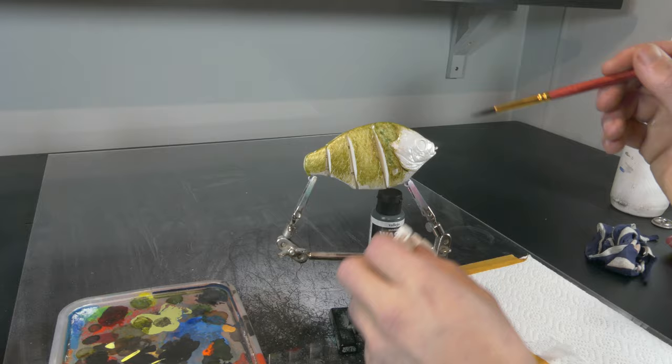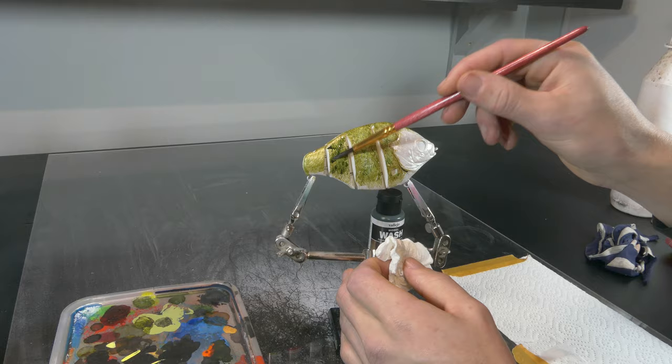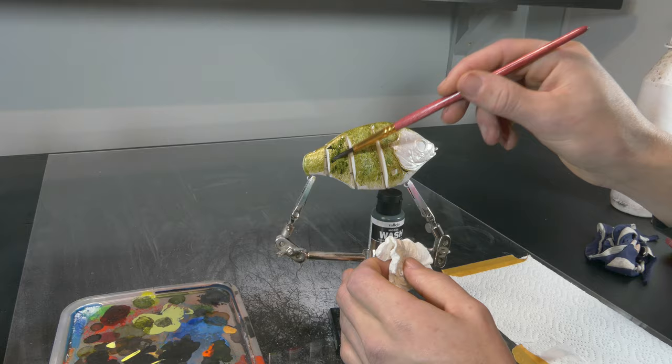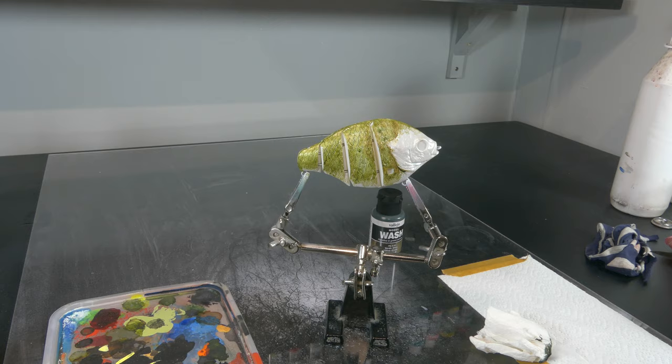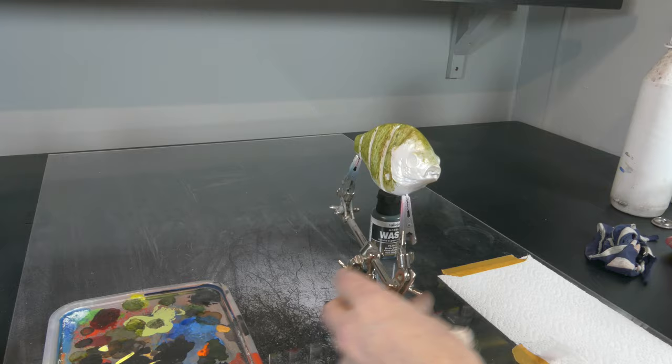Now you have to be careful because a model wash reactivates another model wash that's underneath there. So when you are stippling, you have to be careful you do not wipe away the wash that is underneath. So stipple very carefully, and if you do wipe off a little bit of wash here and there, just apply a little extra wash specifically on that area and let it dry for a little longer.